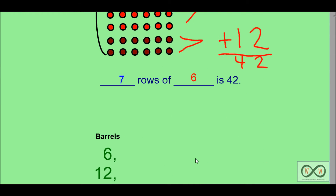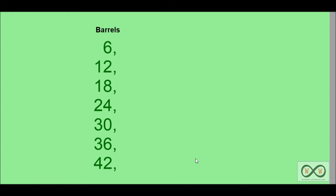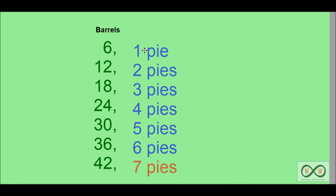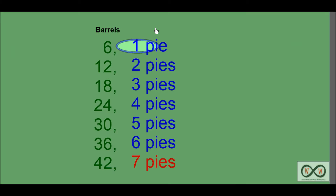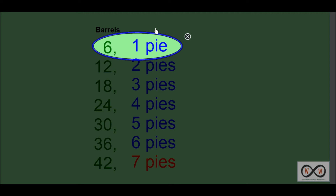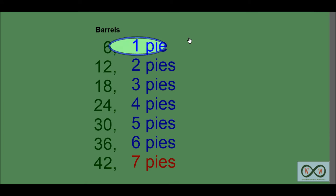Good job. You could also prove your work with skip counting. We skip counted by six to prove this: six barrels in one pie — skip counting from six all the way to 42, showing six for one pie, 12 for two, all the way down to 42 barrels in seven pies. Working backwards, we can see that six barrels go in one pie. That's the solution to the first problem. Let's move on to the next.